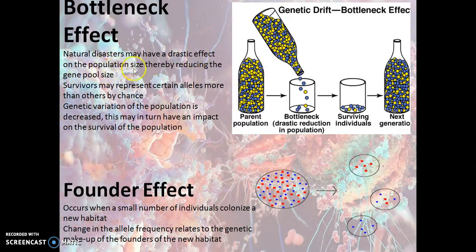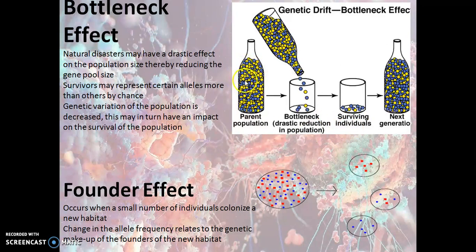Through this diagram, the concept of the bottleneck effect is easy to understand. The parental population passes through a bottleneck, causing a drastic reduction in population. The surviving individuals form a new generation where, for example, the yellow colour population or the blue colour population may dominate. In the bottleneck effect, elimination of certain genotypes occurs due to a catastrophic change or natural disaster, and afterwards a new population rebounds with altered allele frequencies.